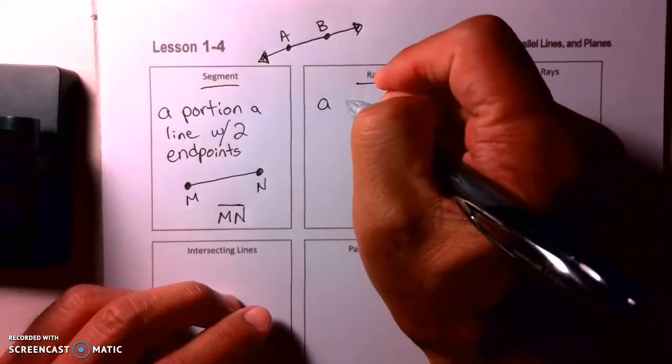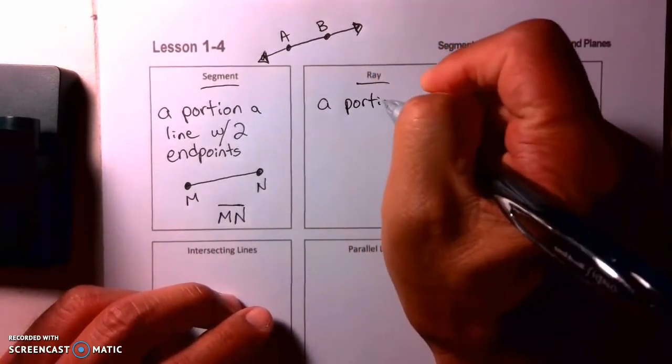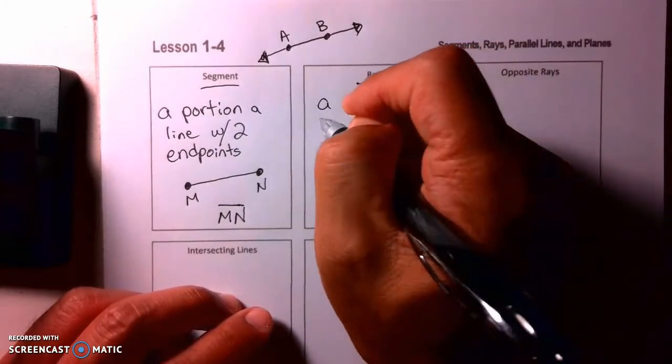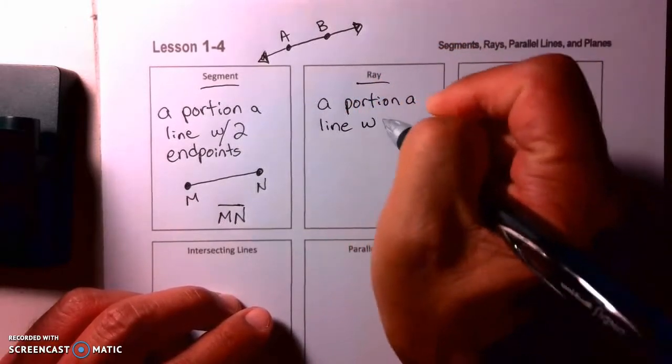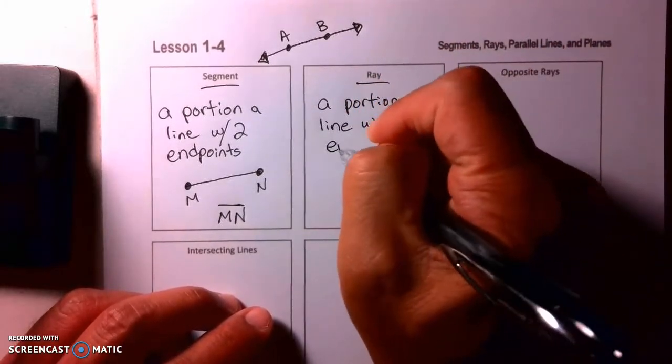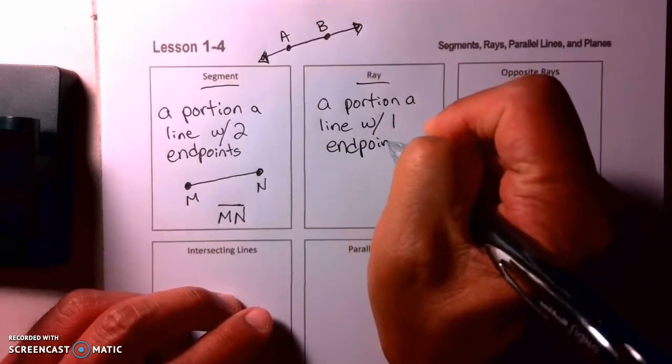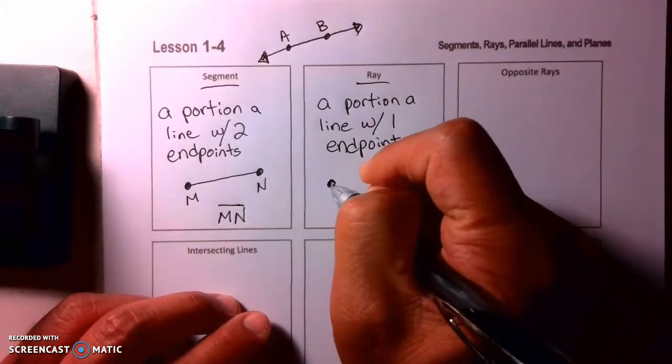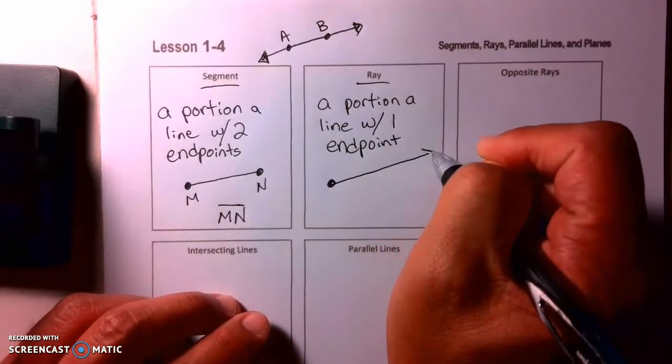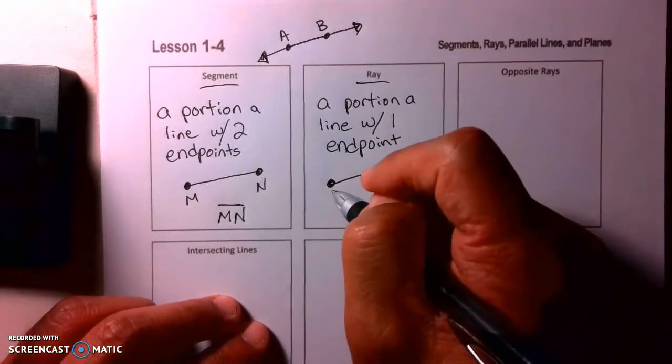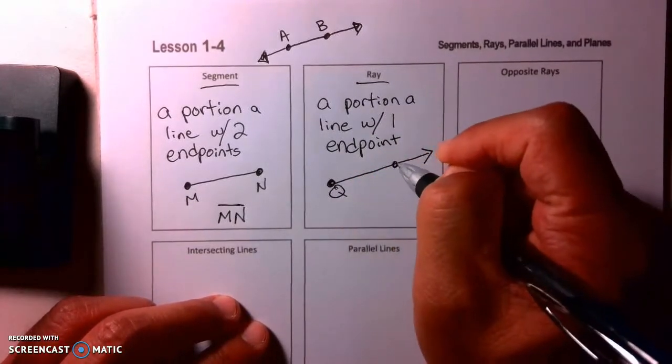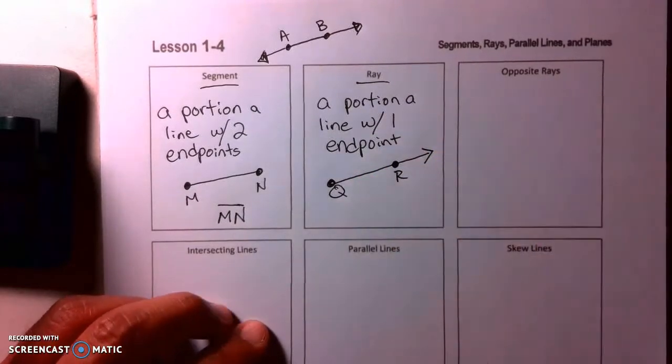A ray is a portion of a line, not with two endpoints, but with one endpoint. Now endpoint means a point that ends. So there would be a point that ends, and then the line goes on forever this way. This would be called a ray. Let's go Q, and then we're going to need another letter here, QR.